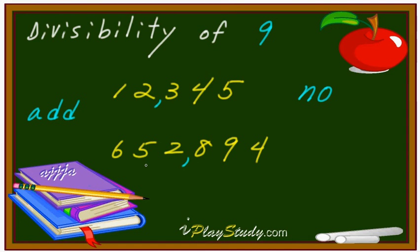What about this one? As soon as you see 9, you can throw it away. But we can keep adding. What about 6 plus 5? That's 11. 11 plus 2 is 13. 13 plus 8 is 21. 21 plus 9 is 30. 30 plus 4 is 34. So 3 plus 4 again, that's 7. 7 is not divisible by 9. That's why this one is also not possible. The answer is no.